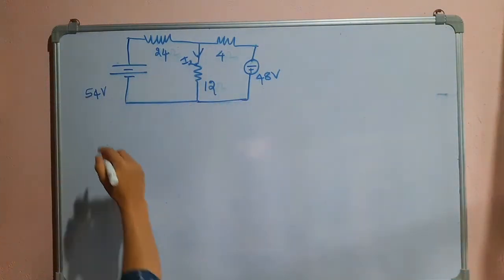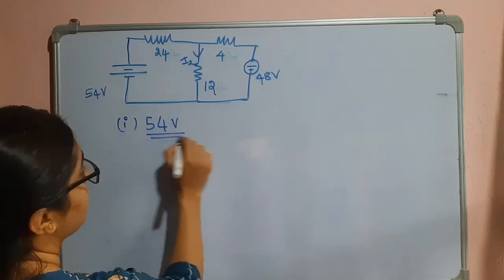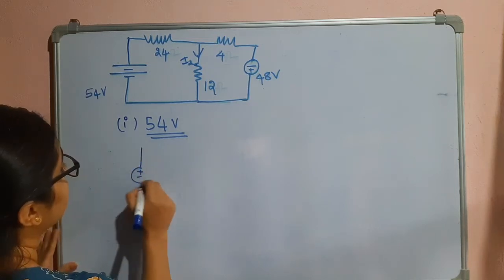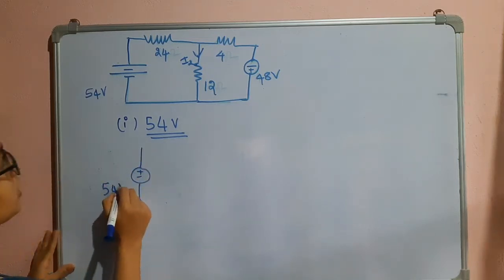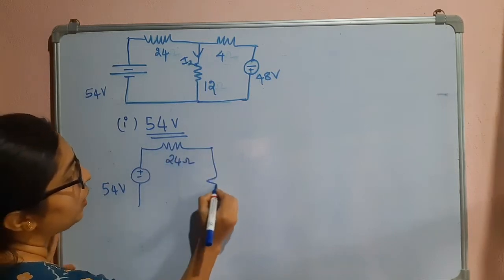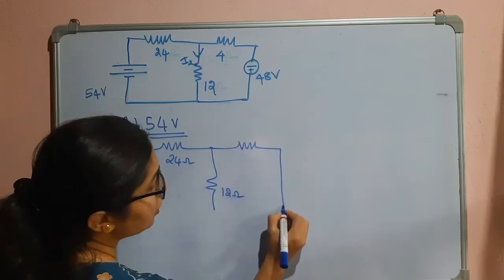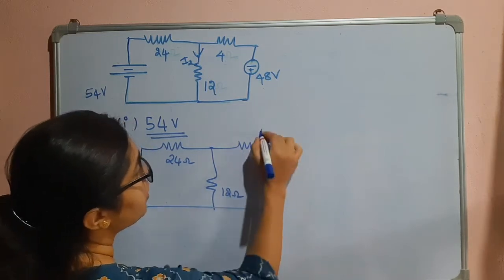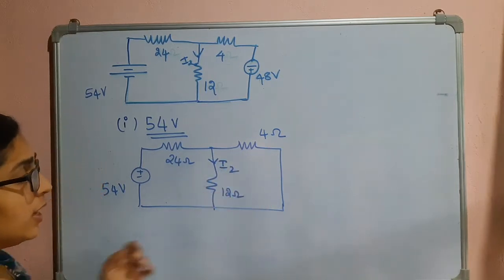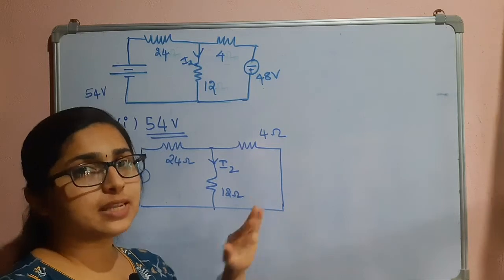Now we will take the 54V source into consideration. We will short the 48V source and redraw this circuit: 54 volts, 24 ohm, 12 ohm, 4 ohm, and the 48V source is shorted. We can see that the 12 ohm and the 4 ohm are in parallel.